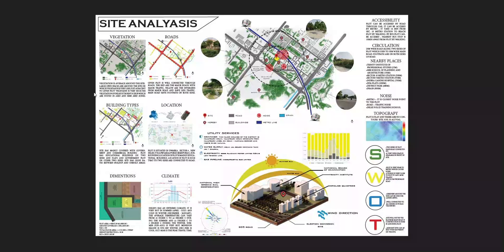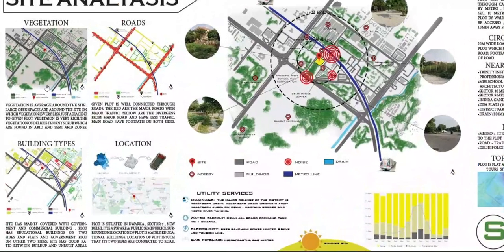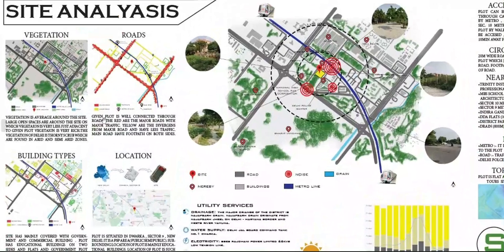Some of those things can be compiled in what we call site analysis. Some of those things could be understanding the vegetation — what is the vegetation around the site? What type of vegetation? What is the existing vegetation? What is the vegetation that could probably be brought in? So you can sort of explore that.